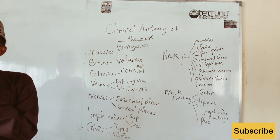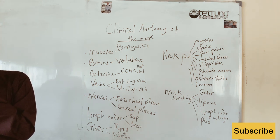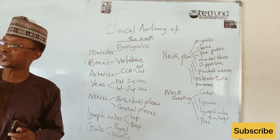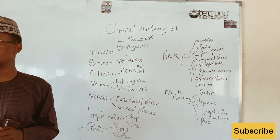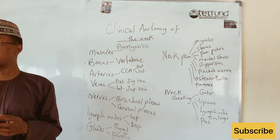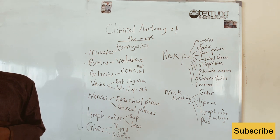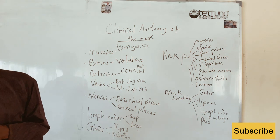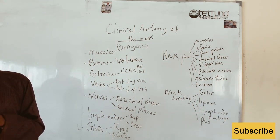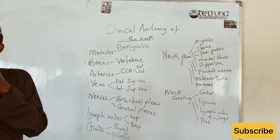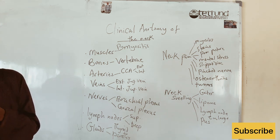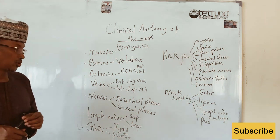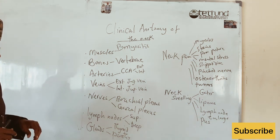After thyroidectomy, the patient must take hormone supplements. One complication of thyroidectomy is damage to the recurrent laryngeal nerve, which lies between the trachea and esophagus at the posterior part of the thyroid gland. In trying to remove the thyroid gland, the surgeon may cut across the recurrent laryngeal nerve, which supplies the muscles of speech formation. This results in what we call a hoarse voice — an abnormal, inaudible voice that is not pleasant.